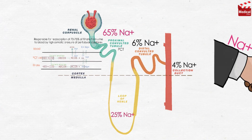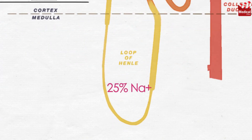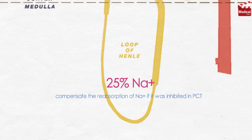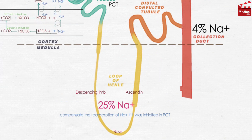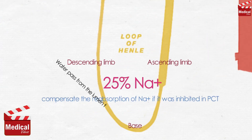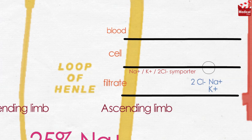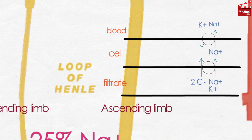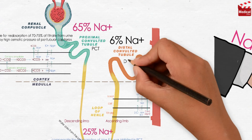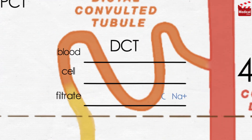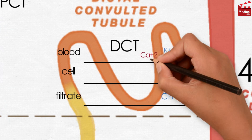The loop of Henle normally causes 25% of sodium reabsorption, and can also compensate for reabsorption of sodium if it was inhibited in the proximal convoluted tubule. It consists of a descending limb, base, and ascending limb. In the descending limb, water passes from the lumen to the blood until reaching the base where water reabsorption stops. The ascending limb contains a sodium-potassium-chloride symporter carrier responsible for 25% of sodium reabsorption; sodium is then discharged into the blood through the sodium-potassium ATPase pump. Calcium and magnesium pass freely to the blood in the same direction as sodium ions. The distal convoluted tubule is responsible for reabsorption of 6% of sodium using a sodium-chloride symporter carrier, with sodium then discharged into the blood via the sodium-potassium ATPase pump. Here, reabsorption of sodium is associated with secretion of calcium ions from blood to urine.